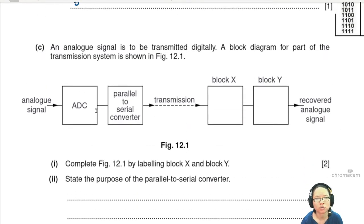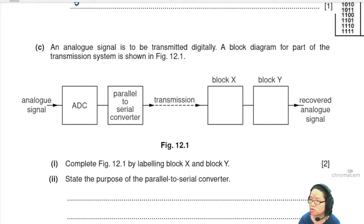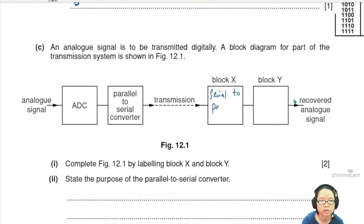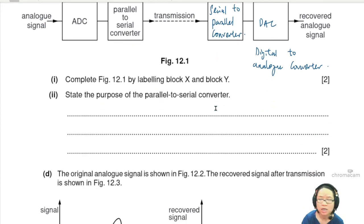Now we look at the block diagram for transmitting an analog signal digitally. From ADC all the way to recovering as an analog signal: complete the diagram by labeling Block X and Block Y. Block X is a parallel-to-serial converter; Block Y is a serial-to-parallel converter. The other blocks are ADC and DAC (digital-to-analog converter).